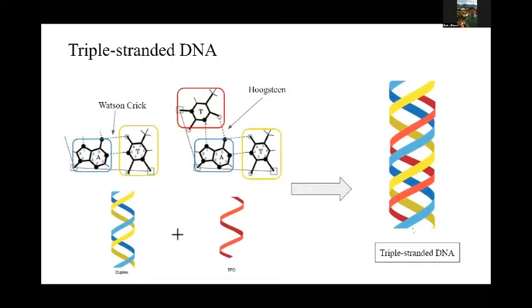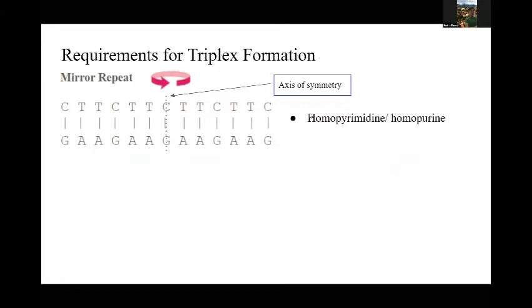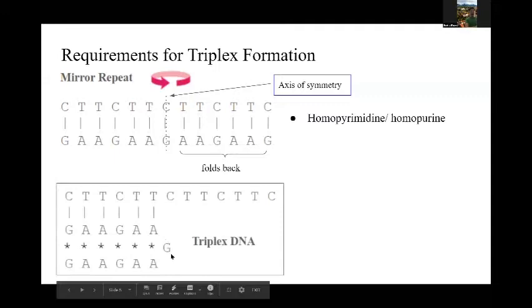There are requirements to form the triplex. The first being is that the sequence itself must be made up of a specific chemical composition where one strand is homopyrimidine or full of C's and T's while the other strand is homopurine full of G's and A's. The sequence itself must also be a mirror repeat where half the sequence is repeated as exactly the same but inverted about a center called an axis of symmetry as seen here. This mirror symmetry is important because one half of the inverted sequence actually folds back and binds to an existing duplex giving rise to your triplex DNA structure. As you see, this sequence is the part that folds back to an existing duplex that gives you one, two, three strands in this conformation.